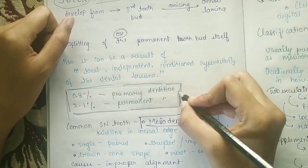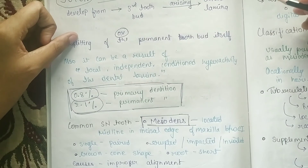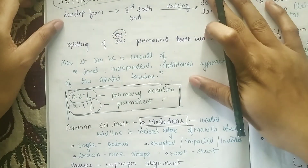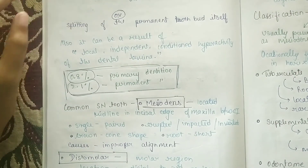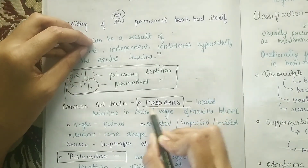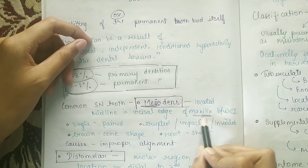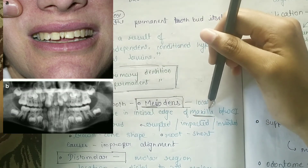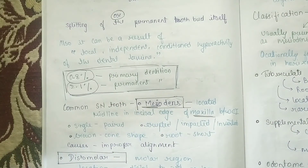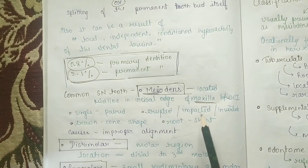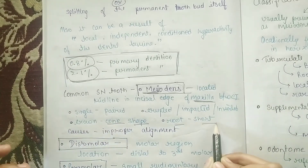Supernumerary tooth cases: 0.8% in primary dentition and 2.1% in permanent dentition. First common type is mesodens — 'meso' means middle. Its location is the midline of the maxilla, between central incisors. It can be single or paired, can be impacted, inverted, cone-shaped, with a very short root.